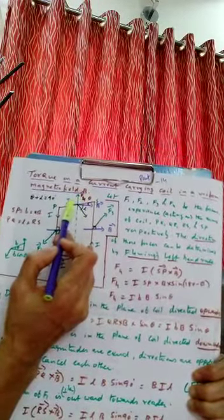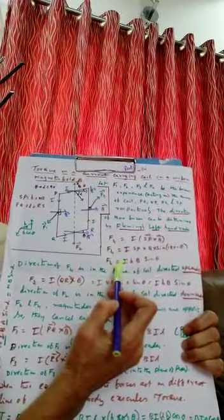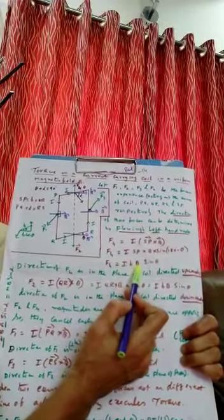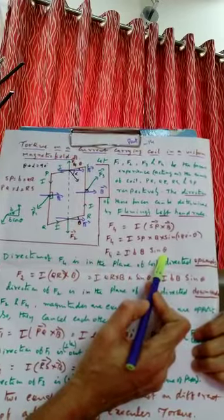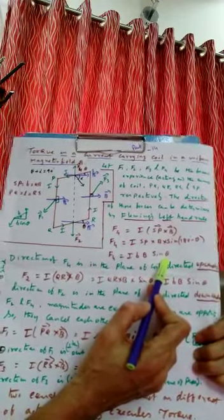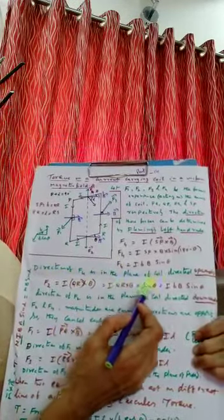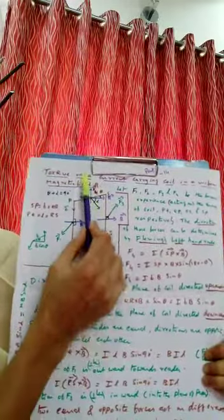The angle we need to take between S to P and B is 180 minus θ. Since sin(180 − θ) = sinθ, we write F4 = I·B·B·sinθ. The direction of F4, by Fleming's left hand rule, is in the plane of the coil directed upwards.